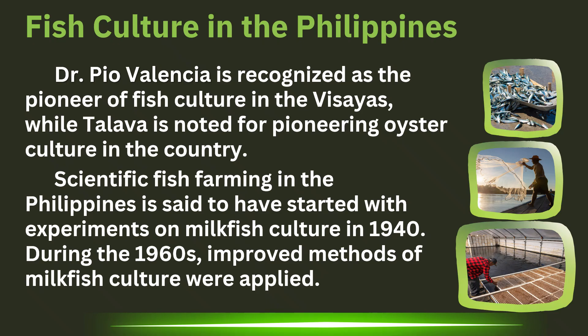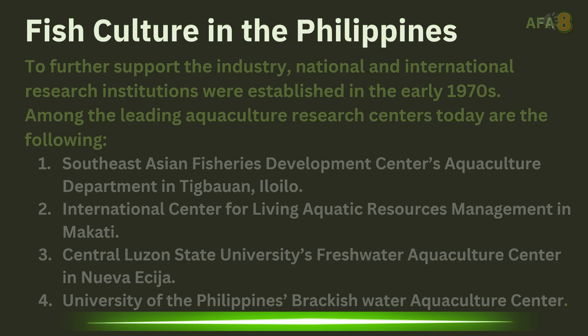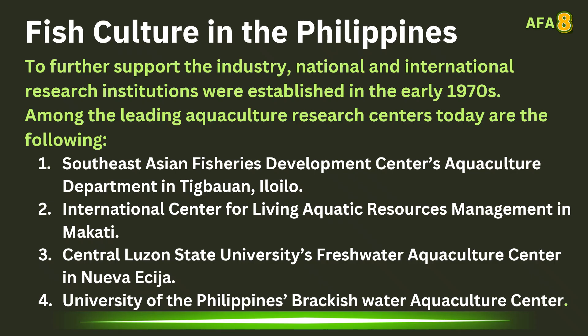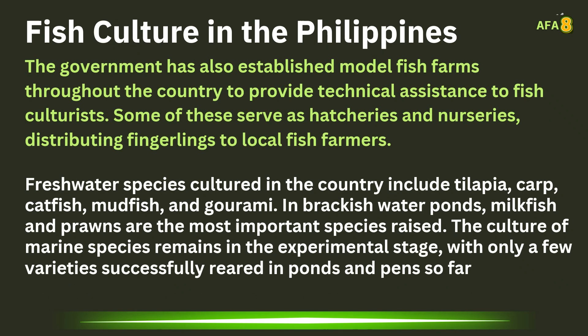Scientific fish farming in the Philippines is said to have started with experiments on milkfish culture in 1940. During the 1960s, improved methods of milkfish culture were applied. To further support the industry, national and international research institutions were established in the early 1970s. The government has also established model fish farms throughout the country to provide technical assistance to fish culturists. Some of these serve as hatcheries and nurseries, distributing fingerlings to local fish farmers. Freshwater species cultured include tilapia, carp, catfish, mudfish, and gourami. In brackish water ponds, milkfish and prawns are the most important species raised, while marine species culture is still experimental with few varieties reared in ponds and pens.